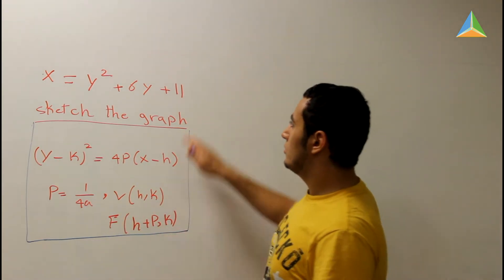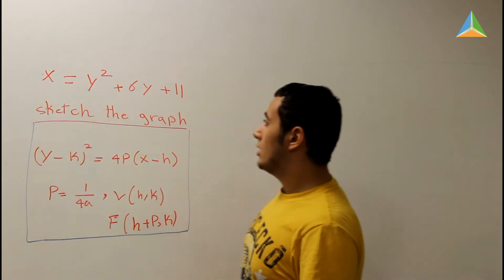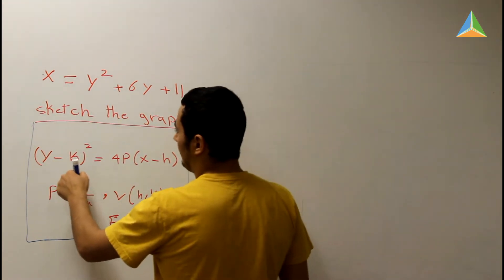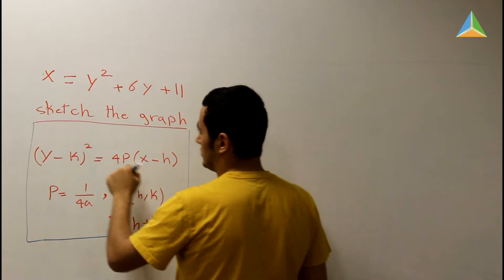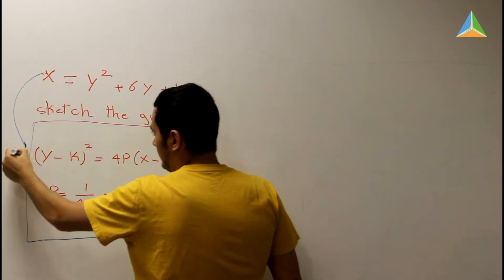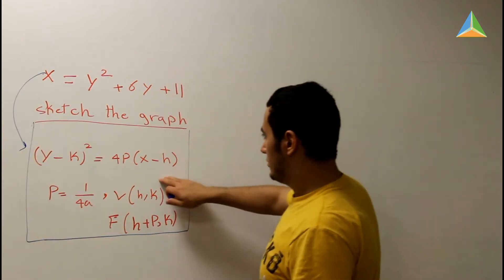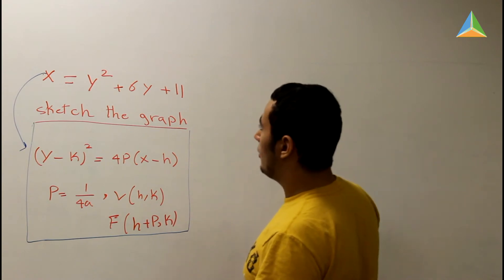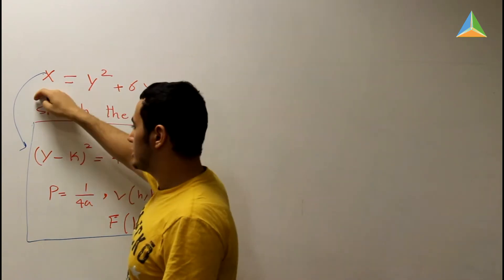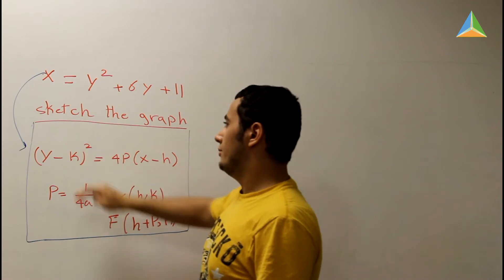The first thing you want to do is look at your expression. By looking at your expression, you can determine that the proper equation you will use is this one. This is our proper equation. After that, you go ahead and simplify your expression to match it with this expression.